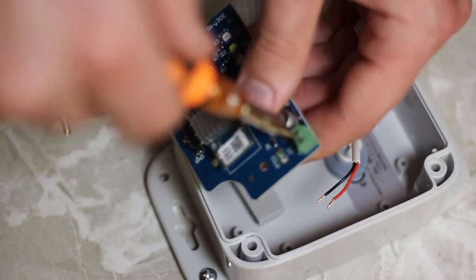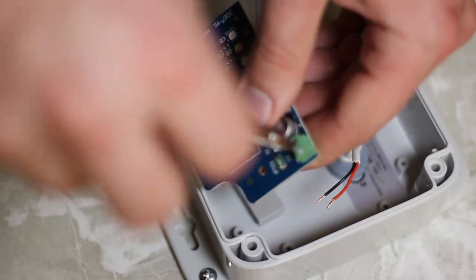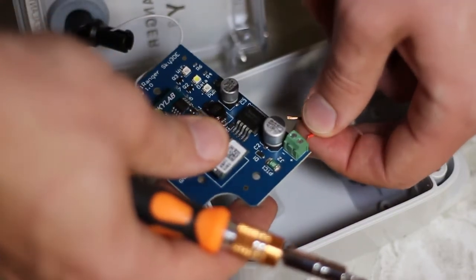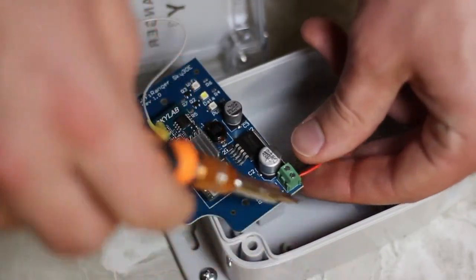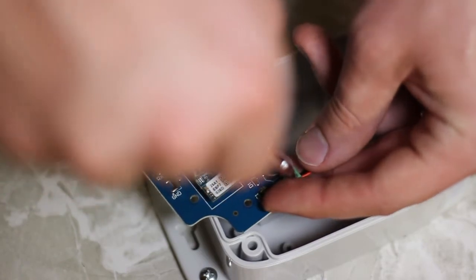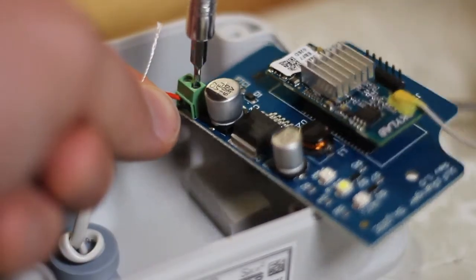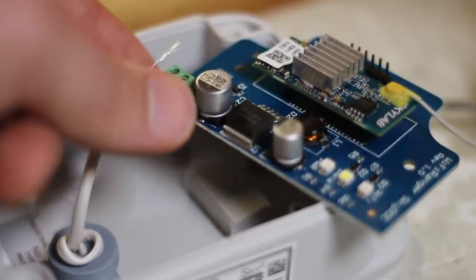Using the precision flathead, loosen the slots for the positive and negative leads. Fully insert one wire at a time and then tighten down the head. Ensure that this is nice and snug and that there are no frayed wires sticking out.